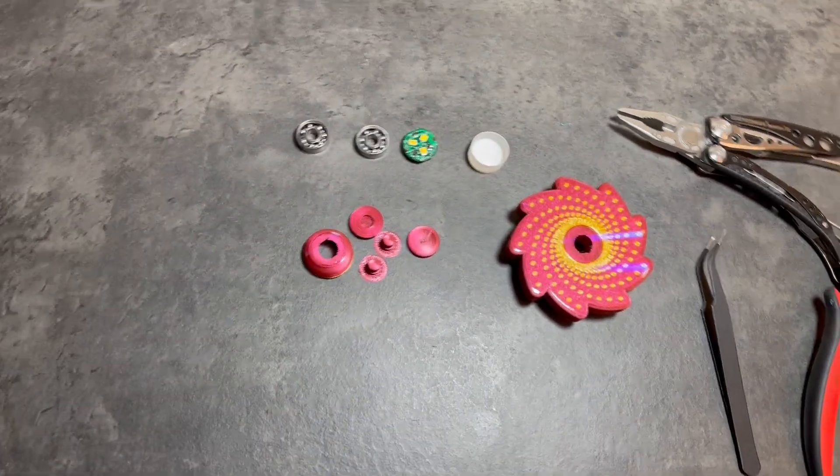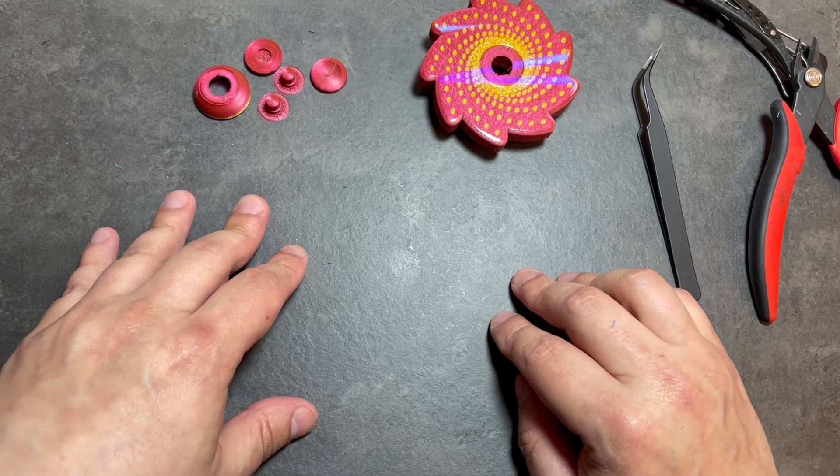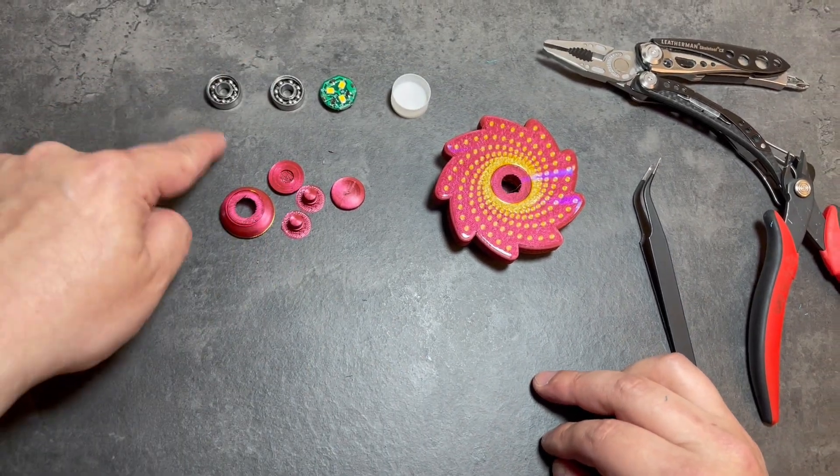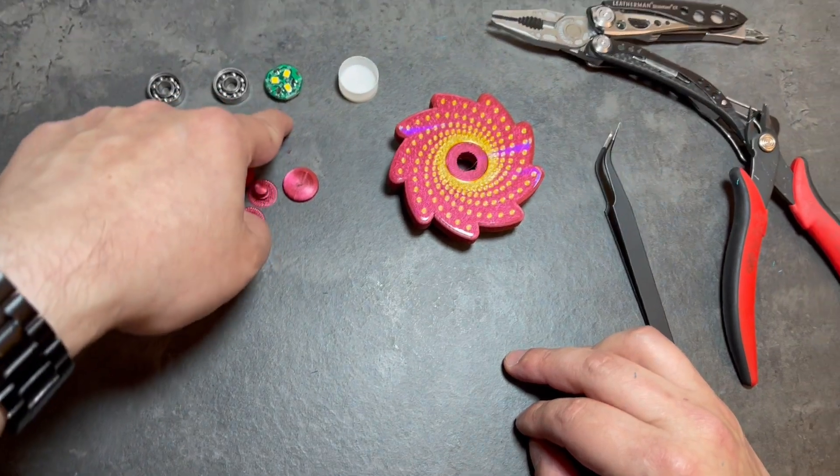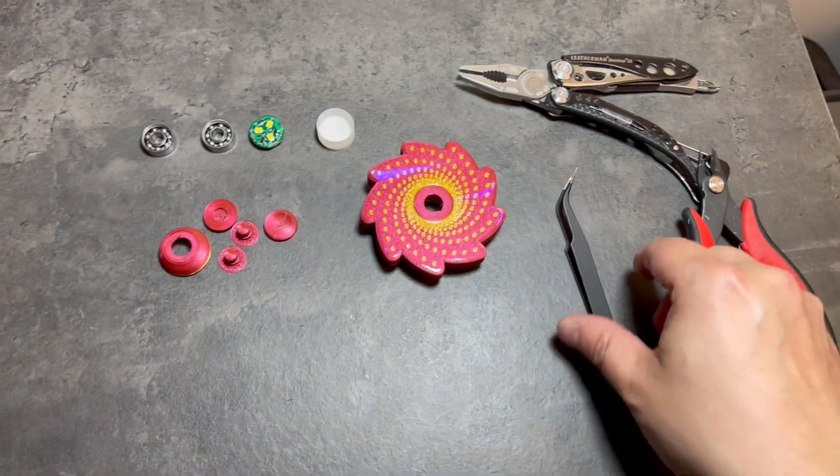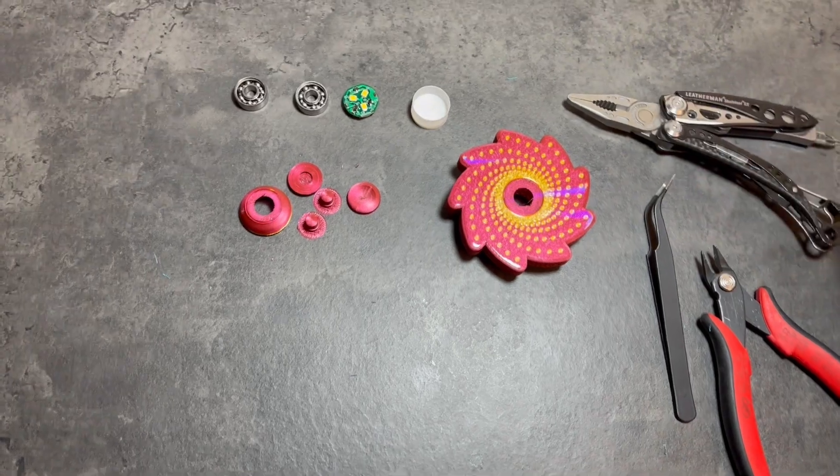All right, so I'm going to show you how you assemble a StarCaster fidget. This is everything freshly printed, and all the supplies - the bearings, which I prepped, I'll do another video on that, the LED, and then just the tools I'll be using: tweezers maybe, flush cutters, and pliers.